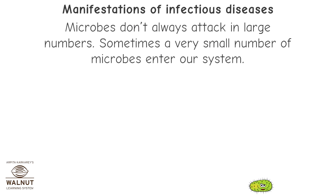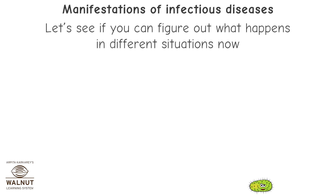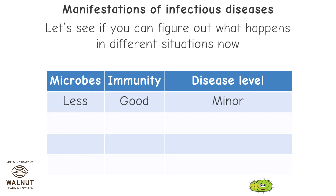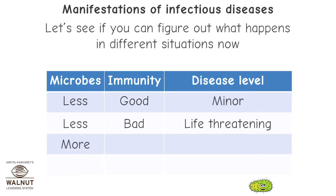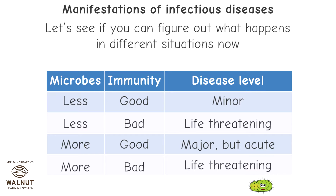Microbes don't always attack in large numbers; sometimes a very small number enter our system. Let's look at different situations: microbes are less, immunity is good — disease level is minor. Microbes are less, immunity is bad — disease level is life-threatening. Microbes are more, immunity is good — disease level is major but acute. Microbes are more, immunity is bad — disease level is life-threatening.